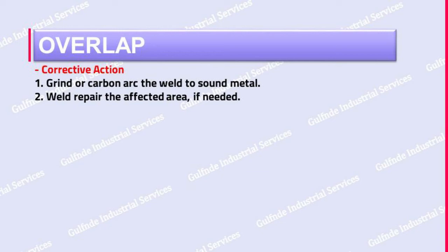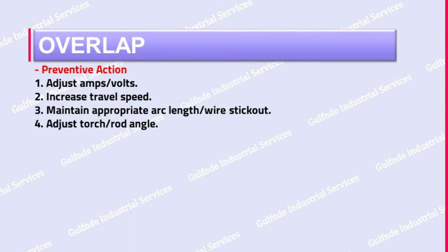What are preventive actions for overlap? One: adjust amperes or volts. Two: increase travel speed. Three: maintain appropriate arc length for wire stick out. Four: adjust torch or rod angle.